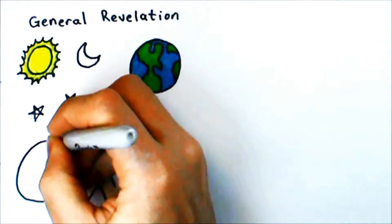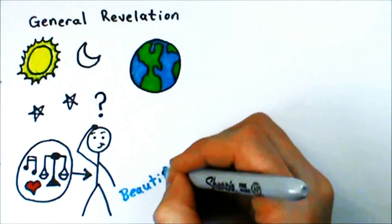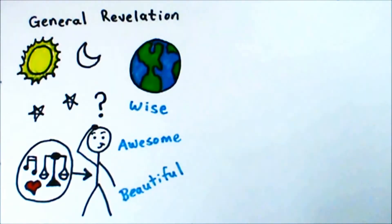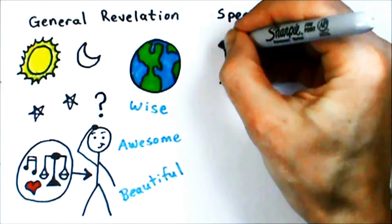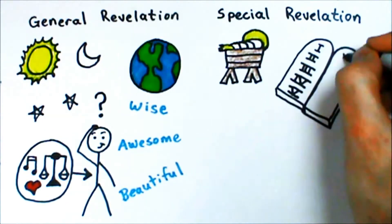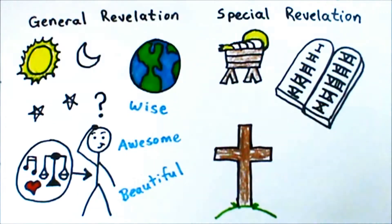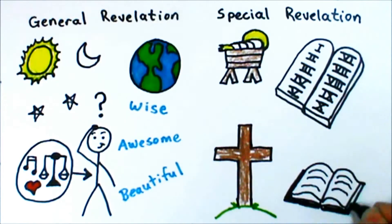Or we look into our own hearts and we find things like a love of beauty, or a sense of right and wrong, and we figure, whoever made me must be beautiful and true and good. This kind of general revelation is available to everyone. But again, because the telescope is cracked, it can only get us so far. We need God's special revelation, if we're to know Him truly.